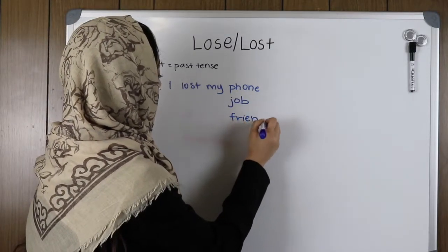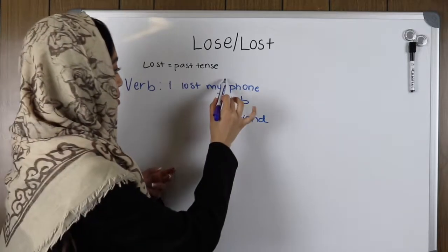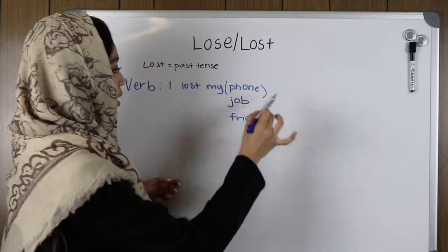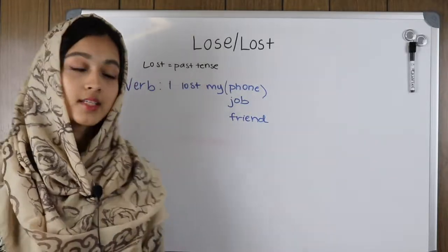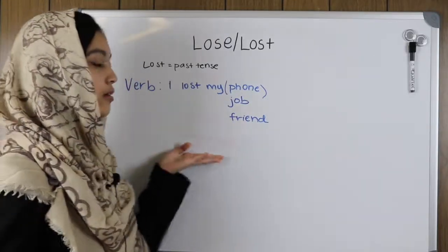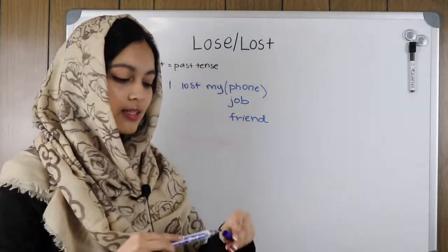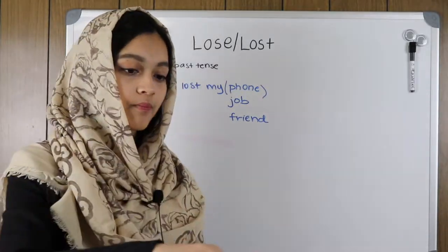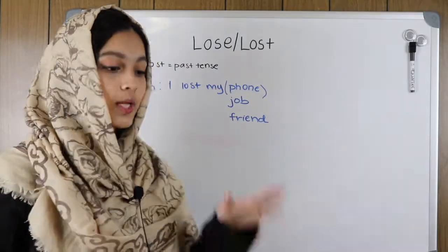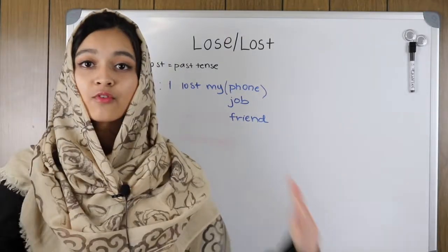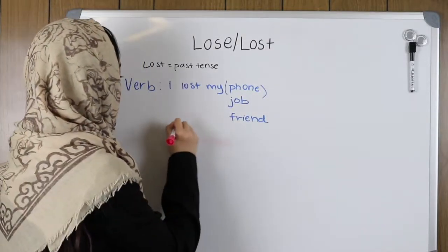You can basically replace the object with anything that you have lost — 'I lost my ___' and you can fill in the blank. However, there is one exception to this rule. You can say 'I lost my blank' for everything except for one thing, and I'm going to put a star right here.